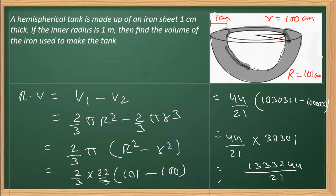Dividing gives approximately 63,487 cubic centimeters. That is the final answer in cm³ — the required volume of the material used in making this tank.